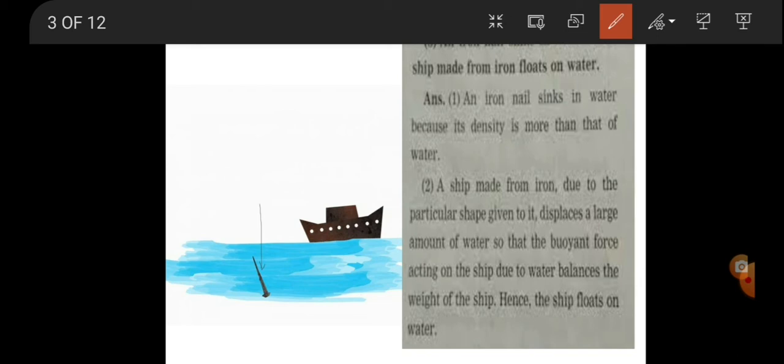The perpendicular shape displaces large amount of water. The buoyant force acting on the ship due to water balances the weight of the ship, hence the ship floats on the water. These are the reasons why nail sinks and ship floats on sea water.